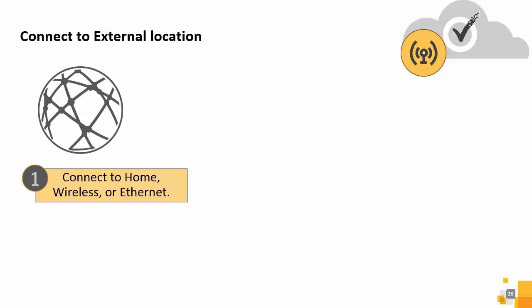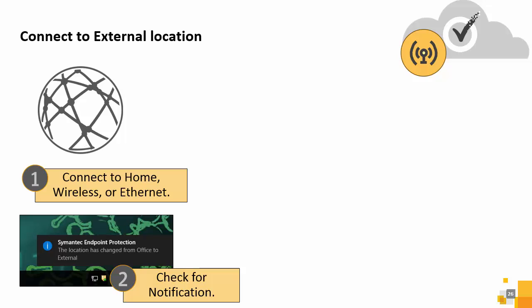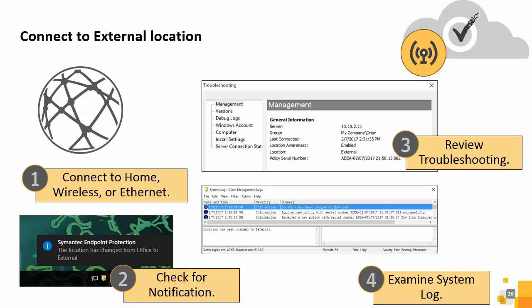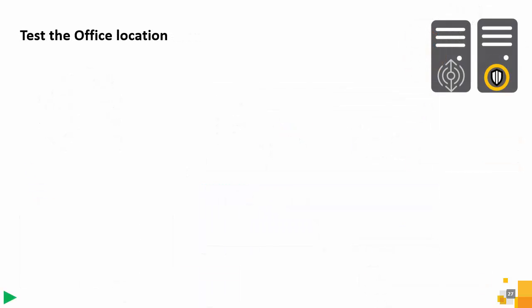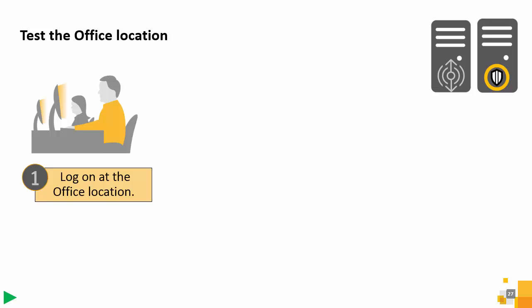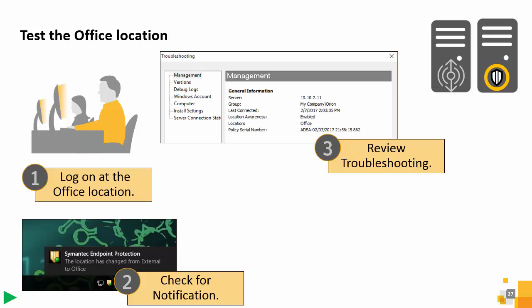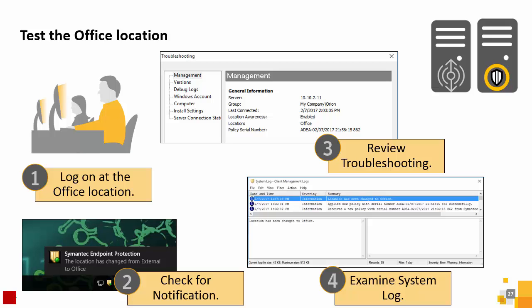Follow the steps shown on the slide to connect to the external location. Note that for the external location, clients retrieve content from the public Symantec Live Update server. To test the office location, Angela disconnects from the external location. A new notification displays in the system tray. She reviews the troubleshooting window and can see that the location switched to the office. She can also see the new event in the system log. For the office location, clients retrieve content from the default management server and an internal LUA server.